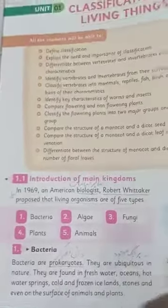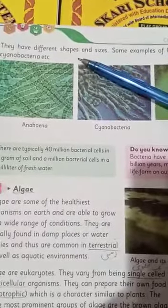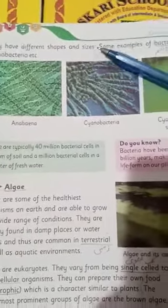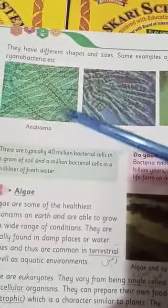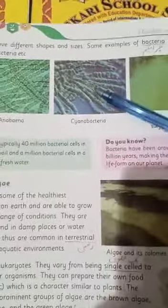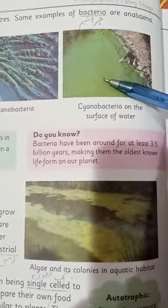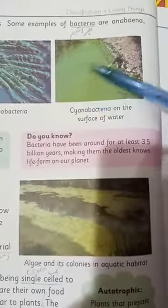Now turn your page and come to page number 4. The first line describes that bacteria have different shapes and sizes. Some examples of bacteria are anabaena and cyanobacteria. You can see here that these bacteria vary in their shape and size. The last picture shows that cyanobacteria is spread out on the surface of the water — this is the cyanobacteria which is present on the surface of water.